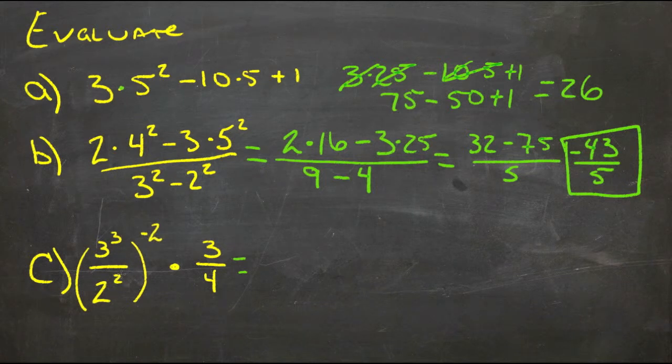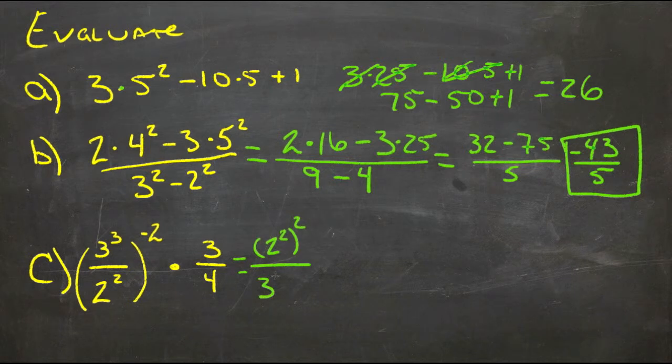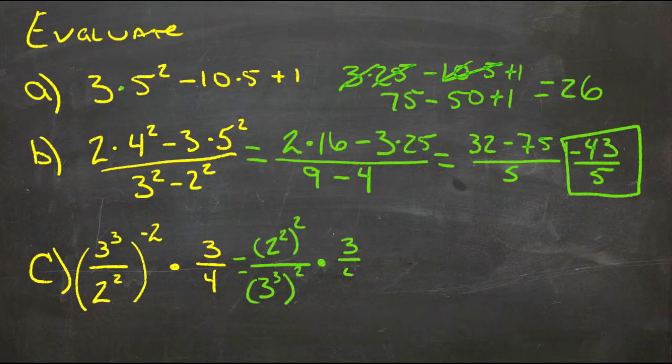So actually we'll flip over this whole thing, and we'll get two squared, squared, over three cubed, squared, and now we have our powers positive, times three-fourths.